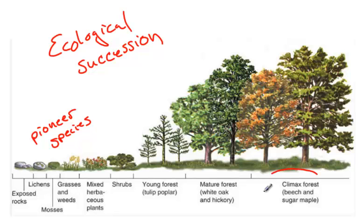Until ultimately, you end up with a climax community, or a climax forest. Once the climax forest has grown to its fullest potential, it is ripe once again for a forest fire or another catastrophic event, and the cycle begins again.